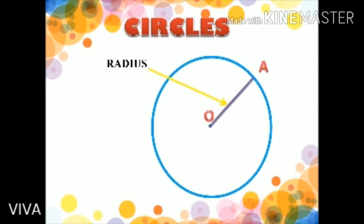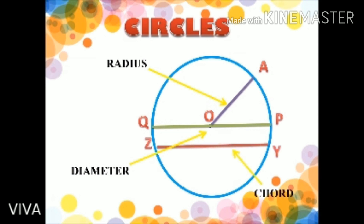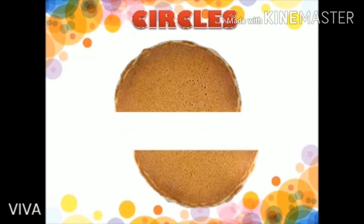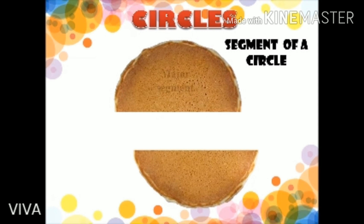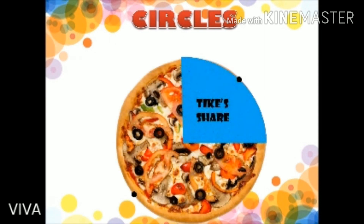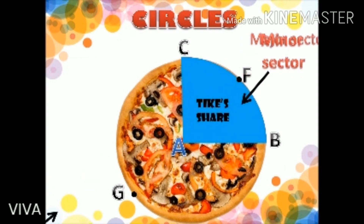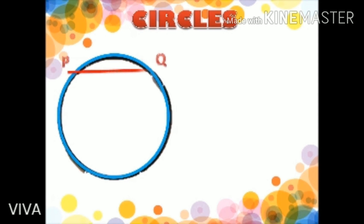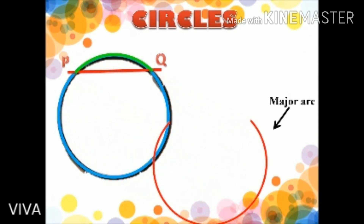So today we have learned about the basic parts of a circle: radius, diameter, and chord. We also studied about a segment, a sector, and an arc of a circle.